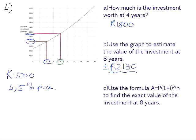Number C, use the formula A equals P into 1 plus I to the power of N to find the exact value of the investment at 8 years. So now we can see how close our estimation was. So our starting value is 1,500. The P is the starting value. The interest is 4.5% per annum as a decimal. That's 0.045.